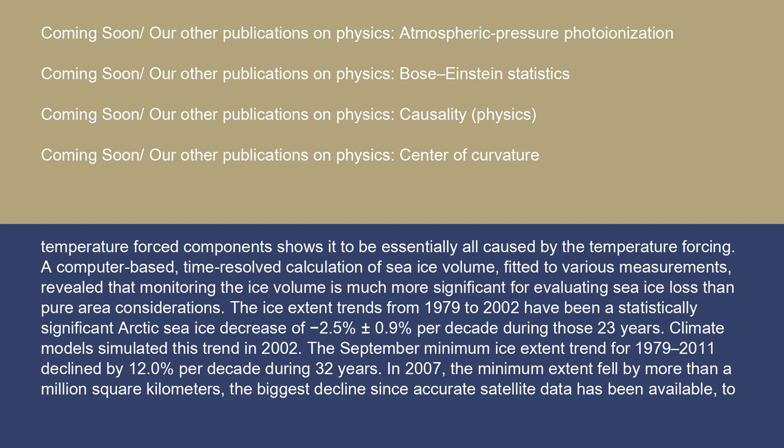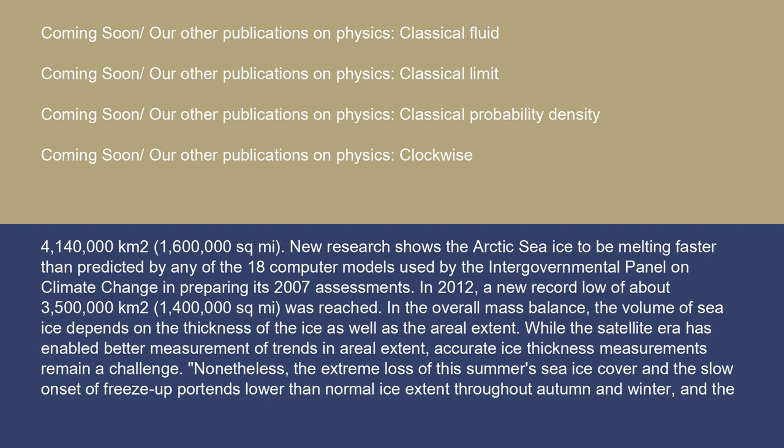Climate models simulated this trend in 2002. The September minimum ice extent trend for 1979 to 2011 declined by 12% per decade during 32 years. In 2007, the minimum extent fell by more than a million square kilometers — the biggest decline since accurate satellite data has been available — to 1,140,000 square kilometers (1,600,000 square miles). New research shows the Arctic sea ice to be melting faster than predicted by any of the 18 computer models used by the Intergovernmental Panel on Climate Change in preparing its 2007 assessments.